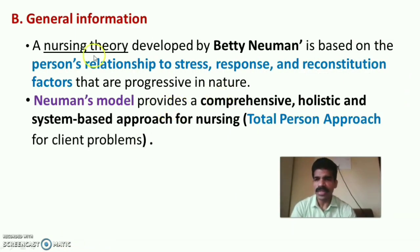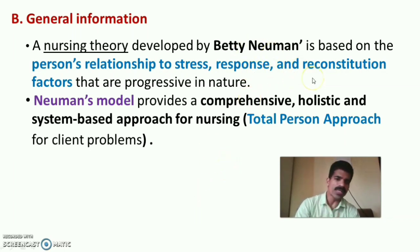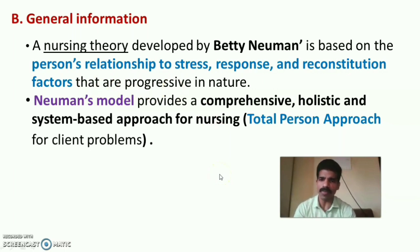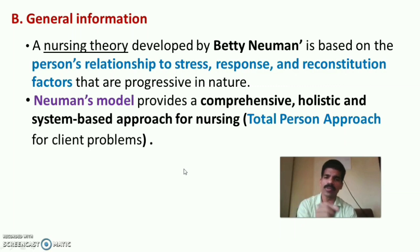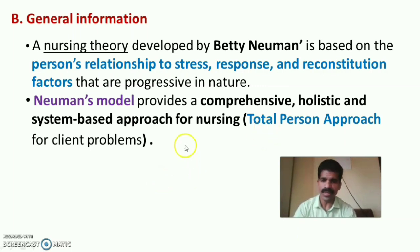The nursing theory developed by Betty Neuman is based on a person's relationship to stress, their response or reaction toward stress, and reconstitution factors — that is, the stability of the human being, which is progressive in nature. The Neuman model provides a comprehensive, holistic, and system-based approach to nursing — a total person approach to various client problems.